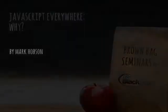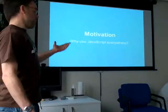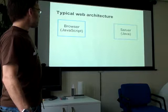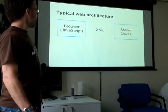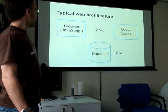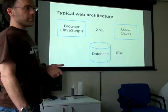This talk is 'JavaScript Everywhere'. First, motivation: why do we want JavaScript everywhere? Let's look at a typical web architecture. We have a browser running JavaScript, a server running Java or some similar language, XML to communicate between the two, and a database with SQL. So we've got a number of languages: JavaScript, XML, Java, and SQL. There's a lot of boilerplate code to go between SQL result sets into Java, marshal into XML, and vice versa. So the question is: can we simplify this?